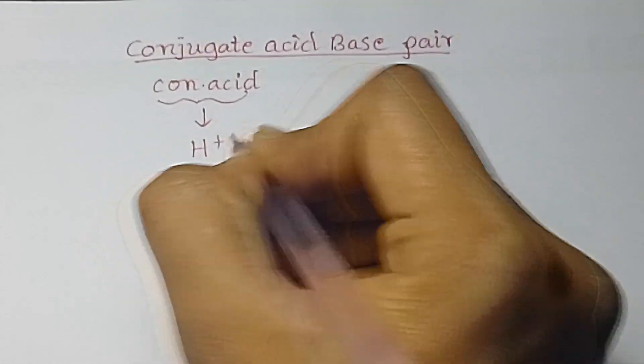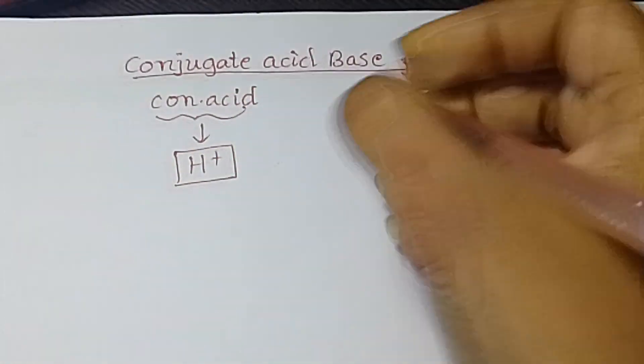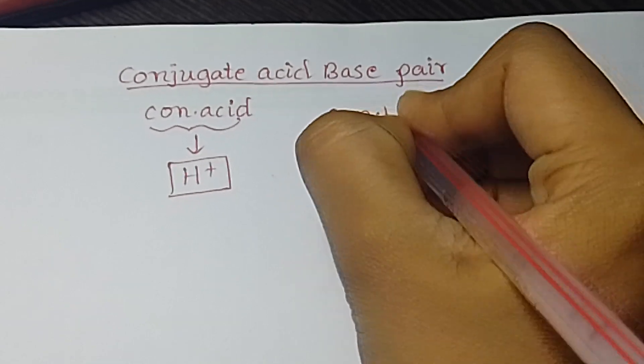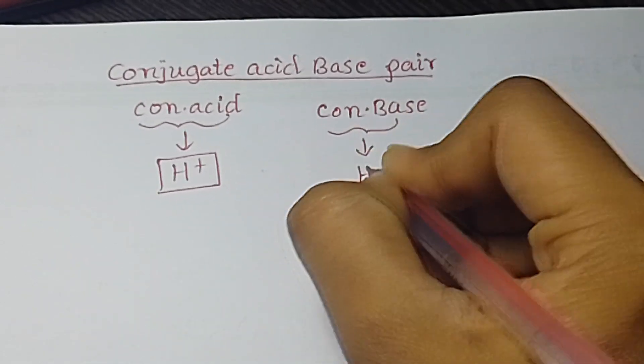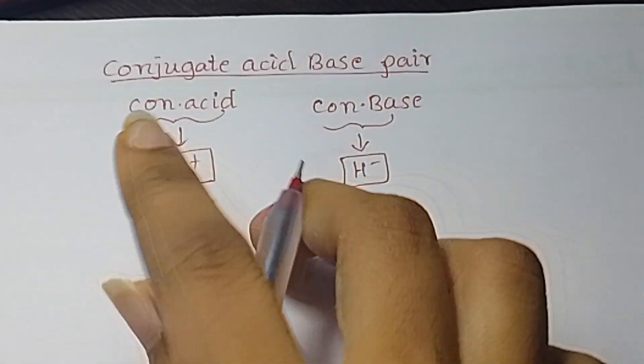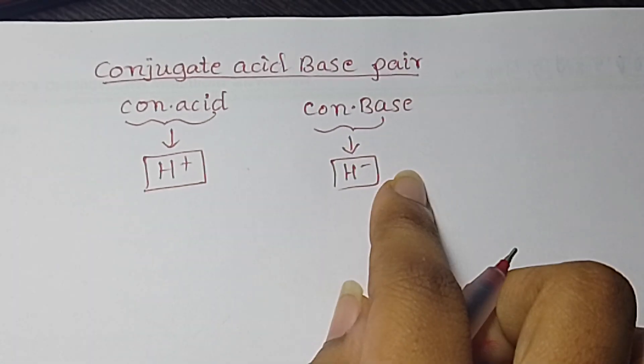First of all, what do you mean by conjugate acid? Conjugate acid is nothing but adding a hydrogen element to the given element. What is conjugate base? Conjugate base is subtracting hydrogen from the given element. So this is known as conjugate acid and this is known as conjugate base.